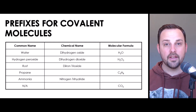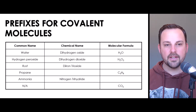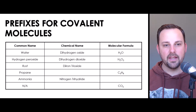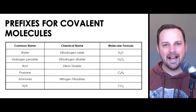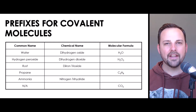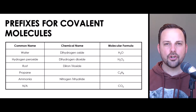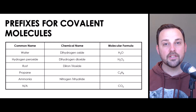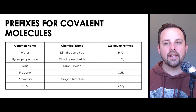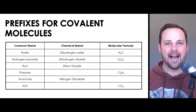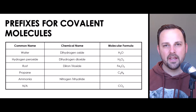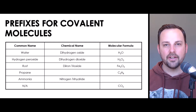Rust is another very common substance you might find around your home. Rust has the chemical name di-iron trioxide. The prefix di means two, so we know there are two iron atoms in the rust molecule. We can also see that oxide — referring to oxygen — has the prefix tri, meaning three, like a tricycle or triangle. So the molecular formula for rust, also called di-iron trioxide, is Fe2O3. Fe is the chemical symbol for iron, telling us there are two iron atoms and three oxygen atoms in a normal rust molecule.